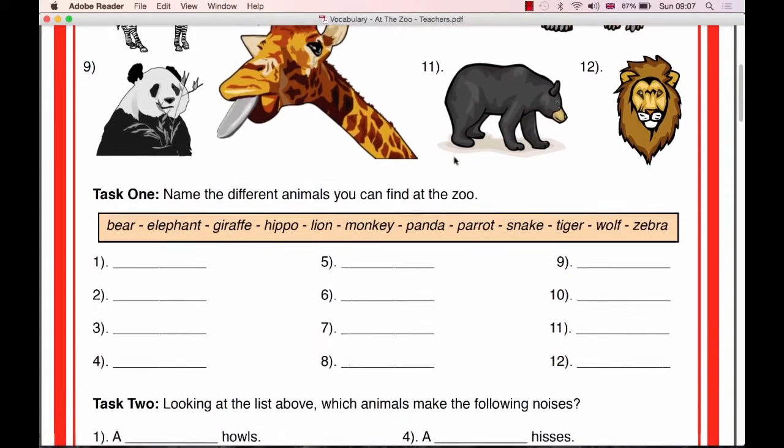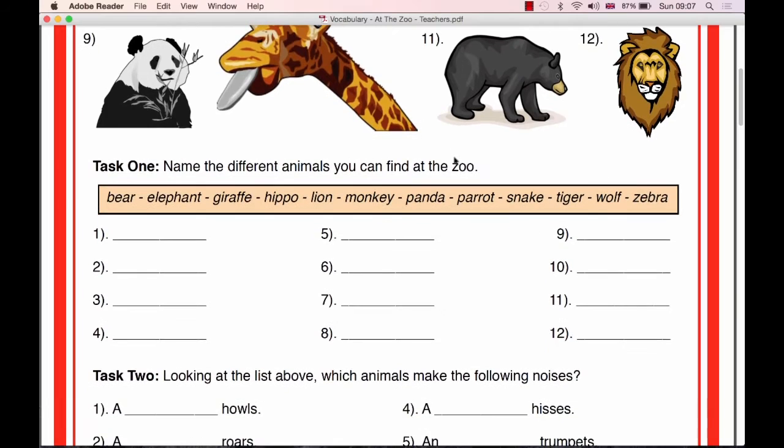Task 1, name the different animals you can find at the zoo and we can read out loud the vocabulary. Bear, Elephant, Giraffe, Hippo, Lion, Monkey, Panda, Parrot, Snake, Tiger, Wolf and Zebra.